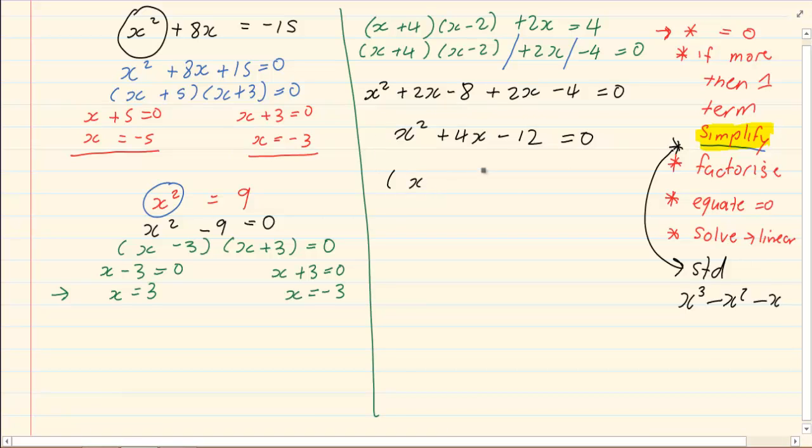We have 6 and 2 factors of 12 plus 6 minus 2. So we have x plus 6 into x minus 2. Then we equate each bracket to 0. We have x is equal to minus 6, x is equal to 2.